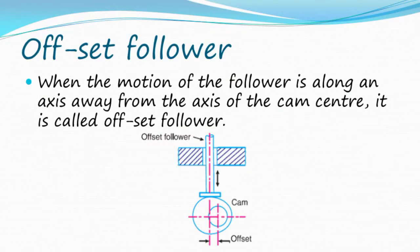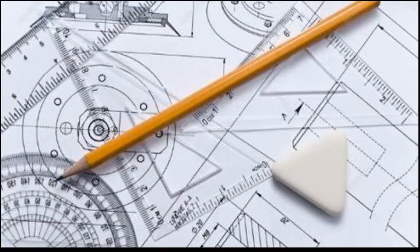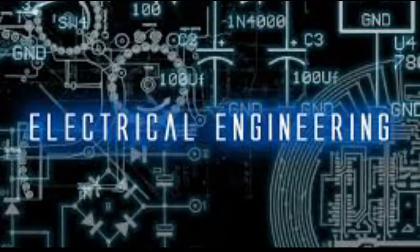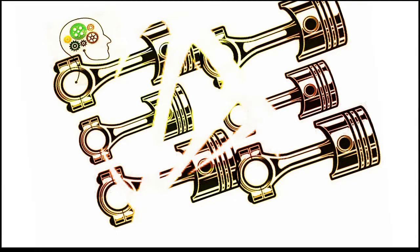Offset follower: When the motion of the follower is along an axis away from the axis of the cam center, it is called offset follower. To view more educational videos of engineering, please like, share and subscribe to my channel.